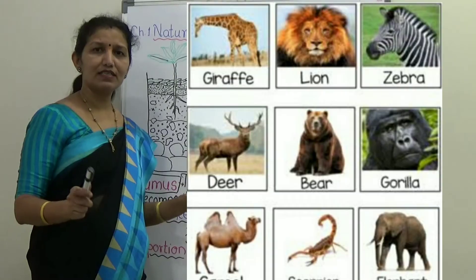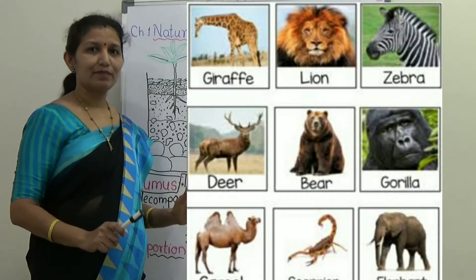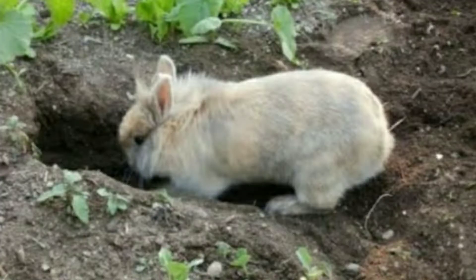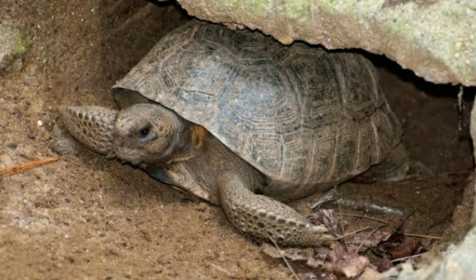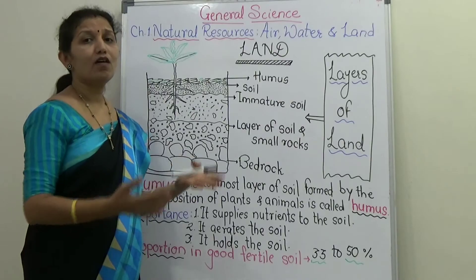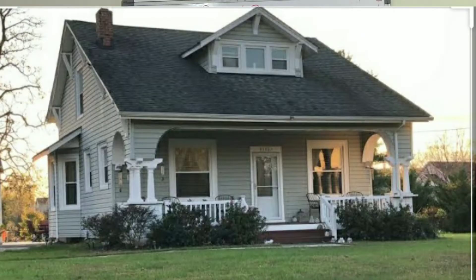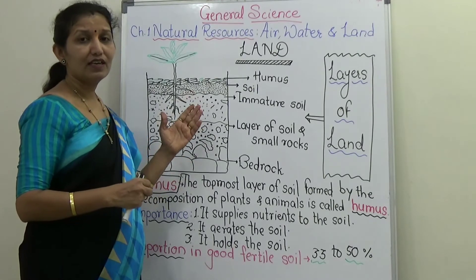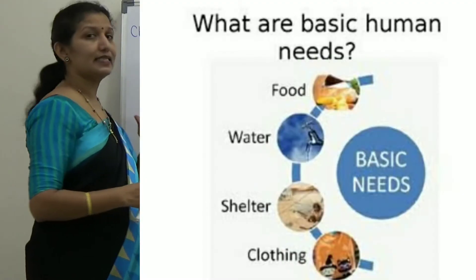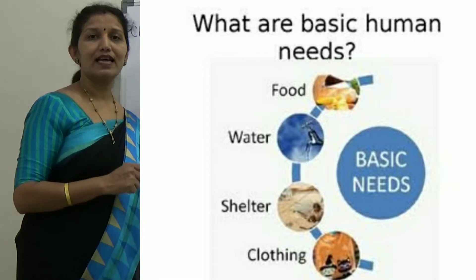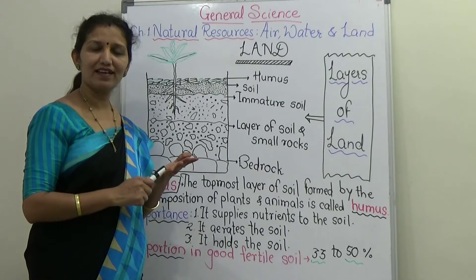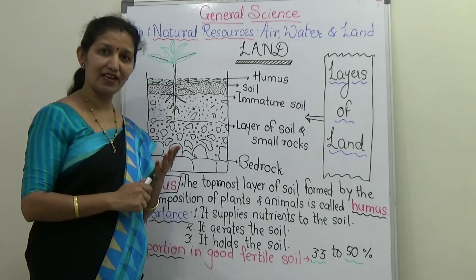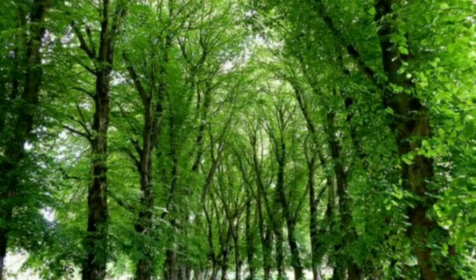All terrestrial animals live on land. Some animals dig burrows in the land and find shelter there. All terrestrial animals, including human beings, find their shelter on land and fulfill their basic needs — food, clothes, and shelter (roti, kapda aur makaan; annavastra ani nivara). All these basic needs are fulfilled by the plants that grow on land.